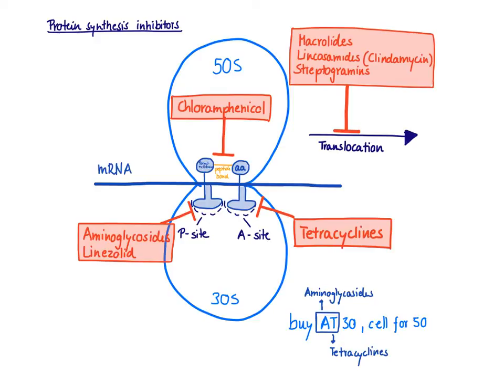There are only two classes of drugs that inhibit protein synthesis from the 30S subunit: the aminoglycosides and the tetracyclines. This can be remembered with the mnemonic AT30 — AT stands for aminoglycosides and tetracyclines — and everything else is 50S. All other drugs inhibit protein synthesis from the 50S subunit. This concludes the introduction to protein synthesis inhibitors, mainly focusing on their mechanism of action.